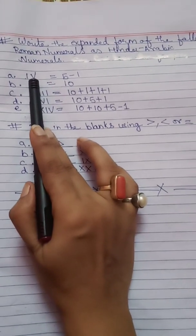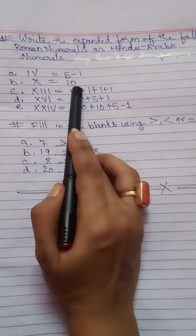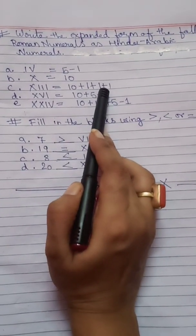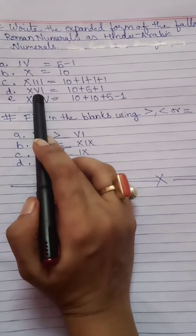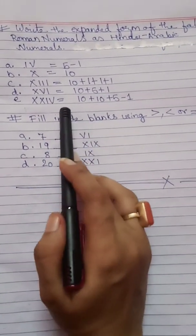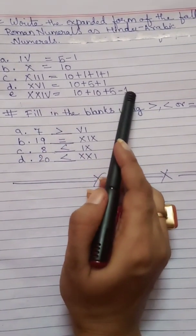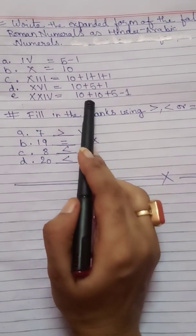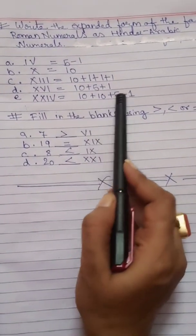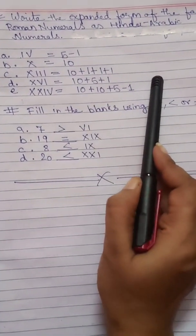Write the expanded form of the following Roman numerals as Hindu-Arabic numerals. For example: 4 is written as 5 minus 1. 10 is directly 10. 13 is 10 plus 1 plus 1 plus 1. 16 is 10 plus 5 plus 1. 24 is 10 plus 10 plus 5 minus 1. We expand using 10 and 5 with plus and minus so that it is easier and simpler to understand.